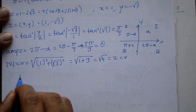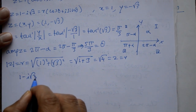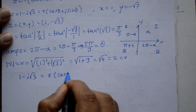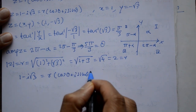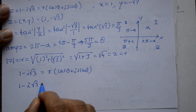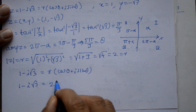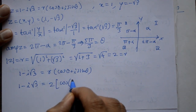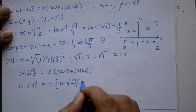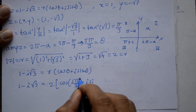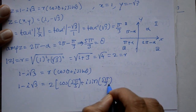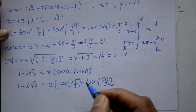Polar form is: 1 minus i into root 3 that is equal to r into cos theta plus i sin theta. That means 1 minus i root 3 equals 2 into cos(5 pi by 3) plus i into sin(5 pi by 3). Is tera haam modulus and amplitude of z nikala sakte.